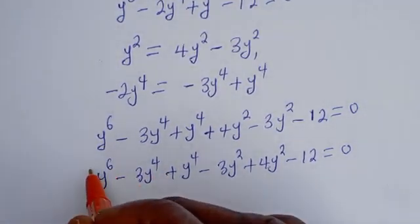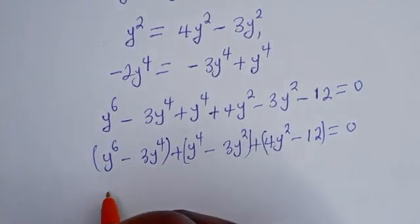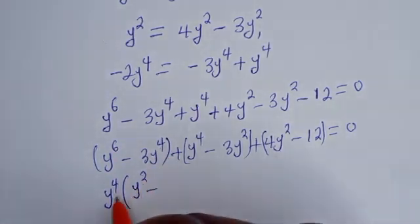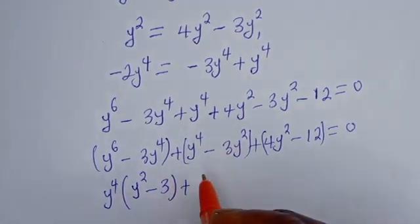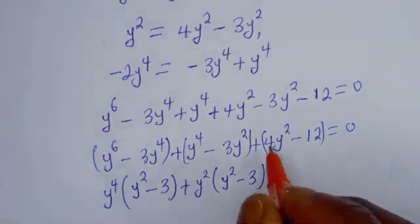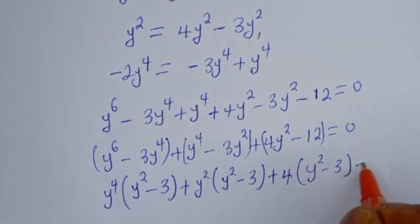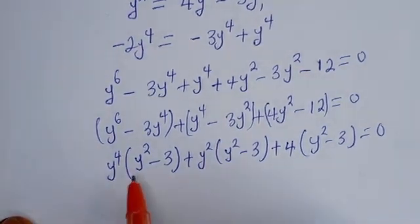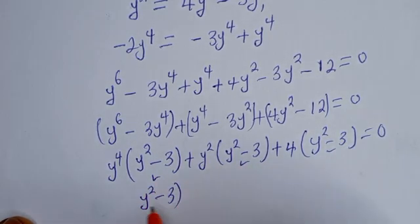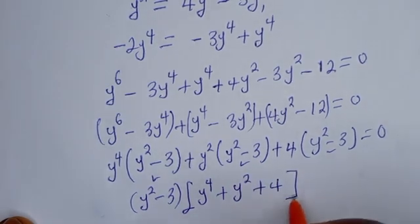Now we group terms: grouping the first pair, the second pair, and the third pair together. From the first group, y to the power of 4 is common — factoring gives y to the power of 4 times y squared minus 3. From the second group, y squared is common, giving y squared times y squared minus 3. From the third group, we get 4 times y squared minus 3. Therefore, y squared minus 3 is common throughout, giving us: y squared minus 3, times y to the power of 4 plus y squared plus 4, equals 0.